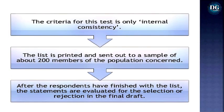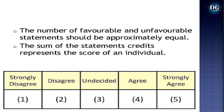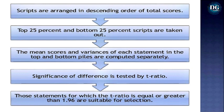For the Likert scale, the criterion is internal consistency. The list is printed and sent to a sample of 200 members of the population. After respondents complete the list, statements are evaluated for selection or rejection in the final draft. The number of favorable and unfavorable statements should be equal. Scripts are arranged in descending order of total scores; the top 25% and bottom 25% of scripts are taken out, and mean scores and variances of each statement in both piles are computed. Significance of differences is tested by t-ratio.